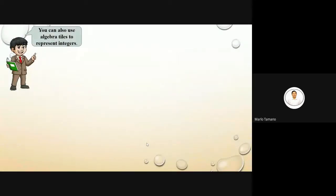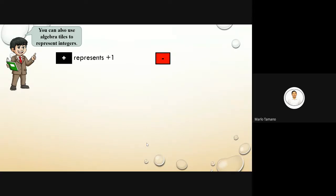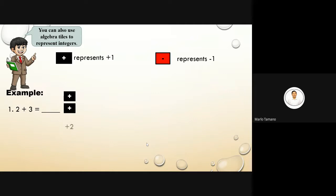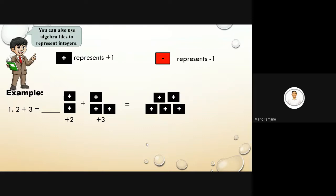You can also use algebra tiles to represent integers. The positive square represents positive one. The red tile with a minus sign inside represents negative one. Example: two plus three equals five. We have two positive tiles plus three positive tiles, giving us five positive one tiles. Combine and add all the tiles that remain — positive five is the answer.